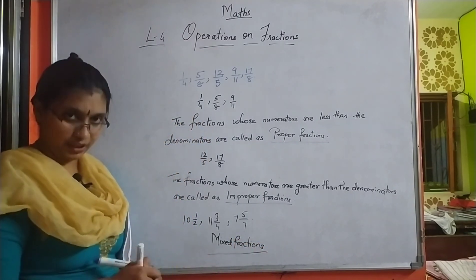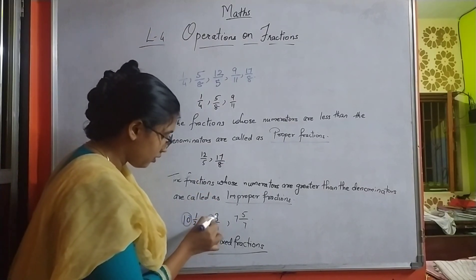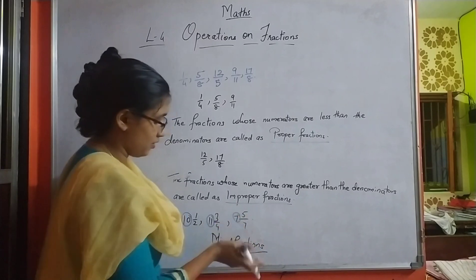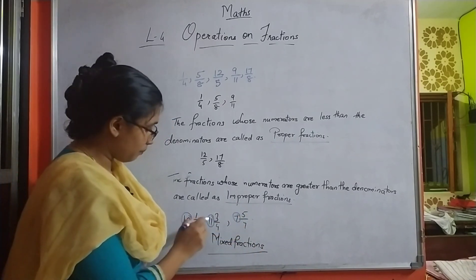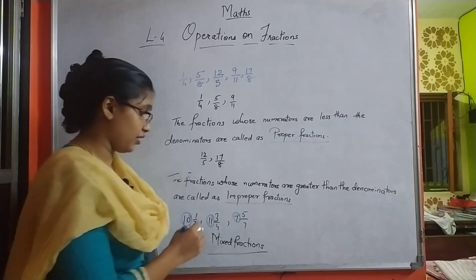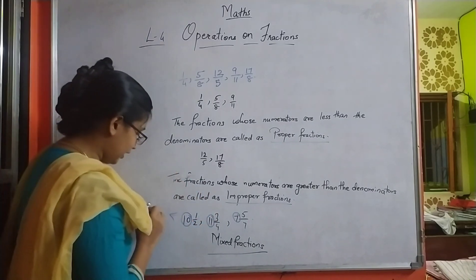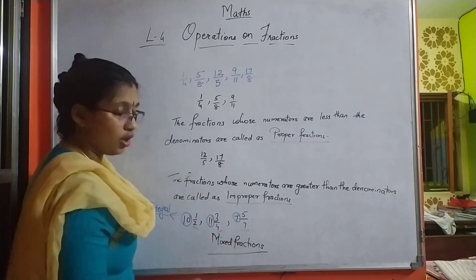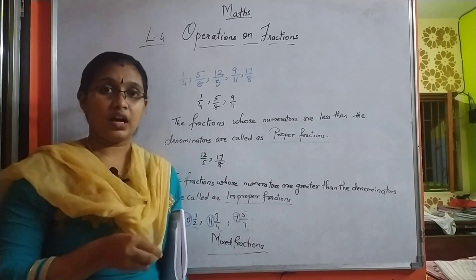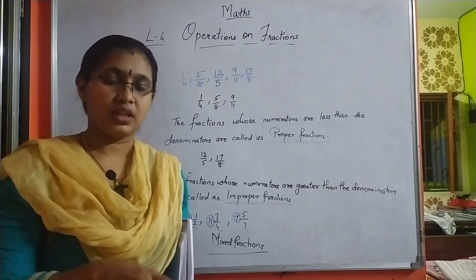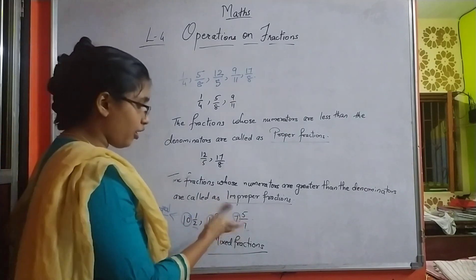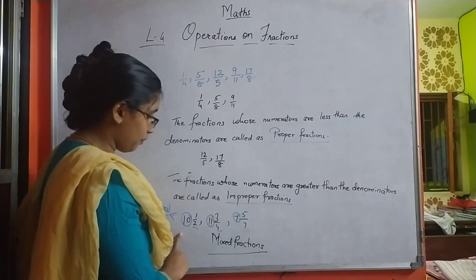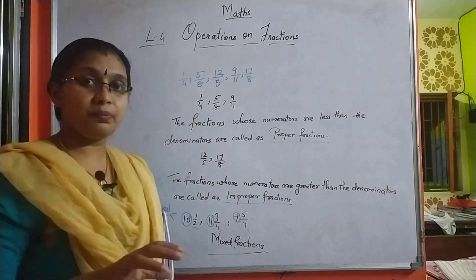Why mixed fractions? We have a whole number before every fraction. In each case, the fraction part is proper: 1 is less than 2, 3 is less than 4, 5 is less than 7. The whole numbers 10, 11, and 7 are integers. So an integral number and a fraction together is called a mixed fraction. Whether the fraction part is proper or improper, if it has an integer with it, it is called a mixed fraction.